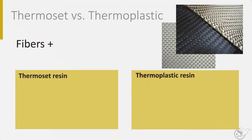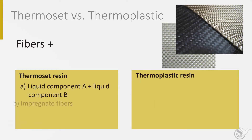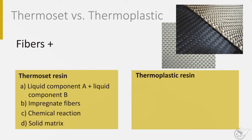When thermoset and thermoplastic polymers are mixed with fibers, the following can be said. For a thermoset, we mix two reactive components A and B, both liquids. When mixed, the liquid is used to impregnate the fibers, meaning filling the spaces between the fibers and the fiber bundles. The polymer becomes the matrix surrounding the fibers. In the next step, the chemical components A and B react and create macromolecular networks and molecular bonds — the polymer solidifies. The time between mixing chemicals A and B and the moment the polymer achieves a specific solidification level is called the pot life, the process window of the polymer.